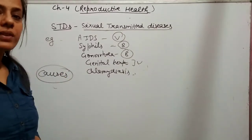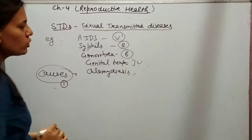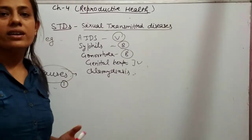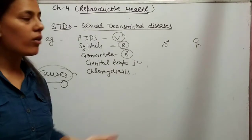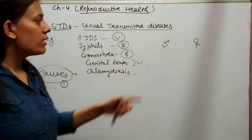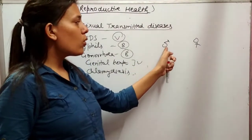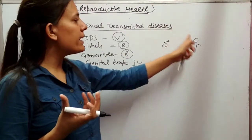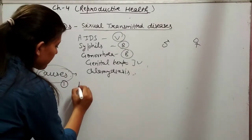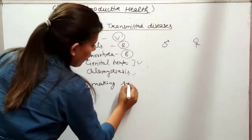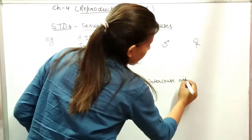What are the causes of STDs? How do STDs spread? The first very common cause is by making sexual intercourse with an infected person. Suppose this is a male and this is a female. If the male is infected and makes sexual intercourse with a healthy female, the infected semen will be injected into the body of the female and the female will become infected.